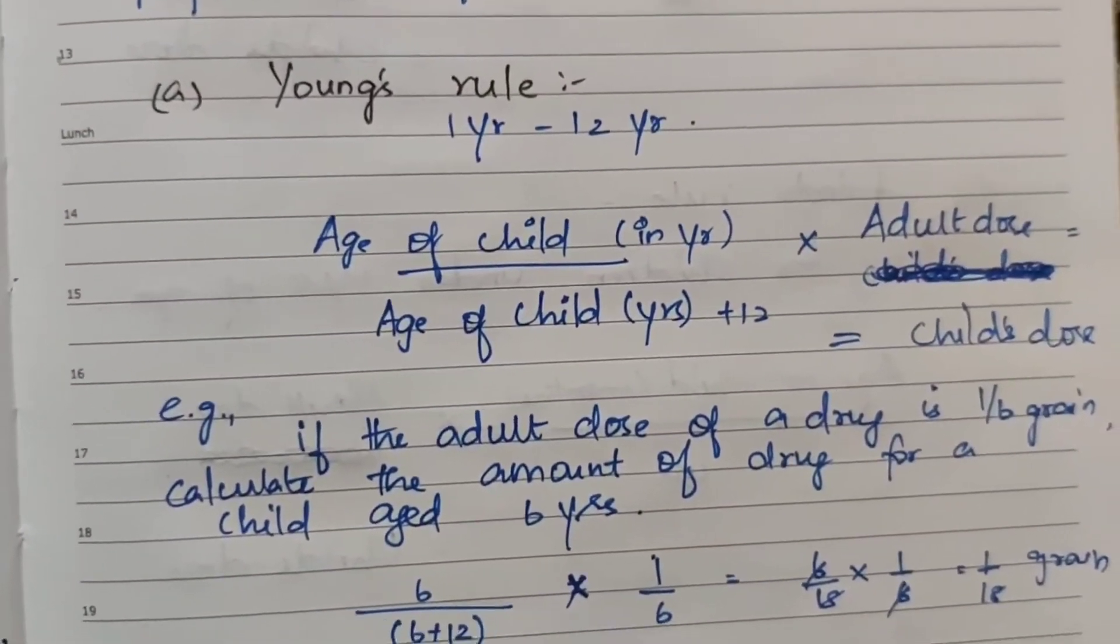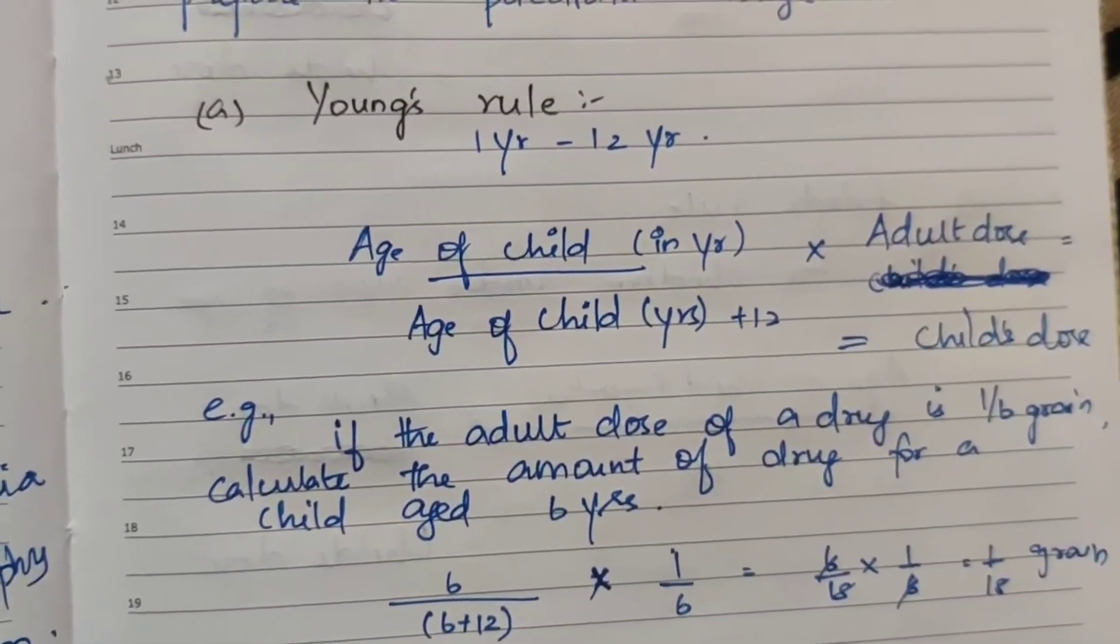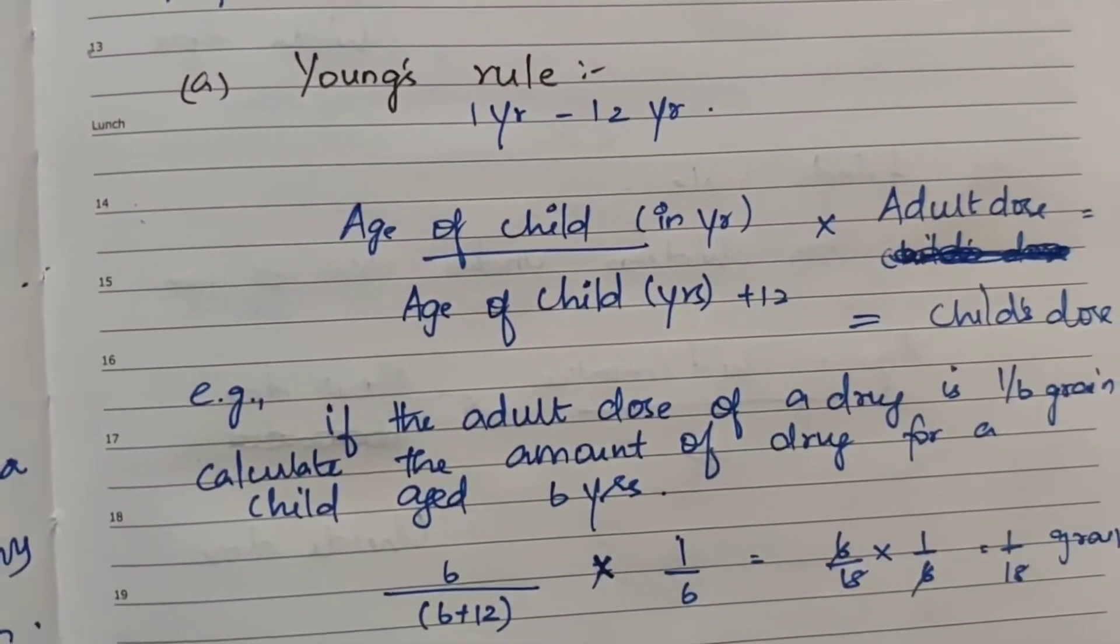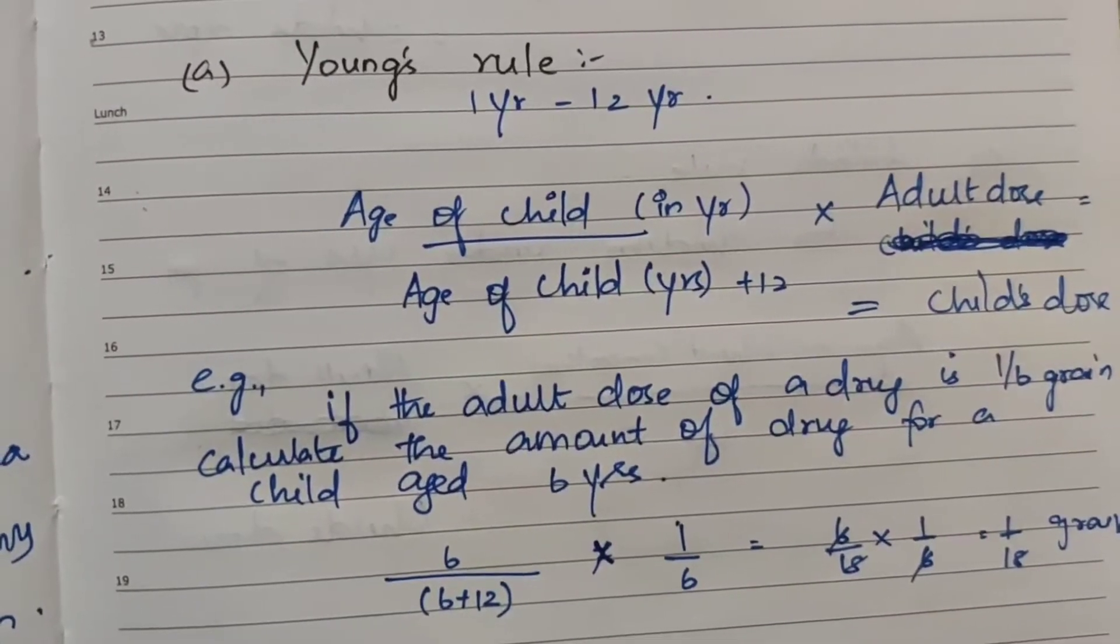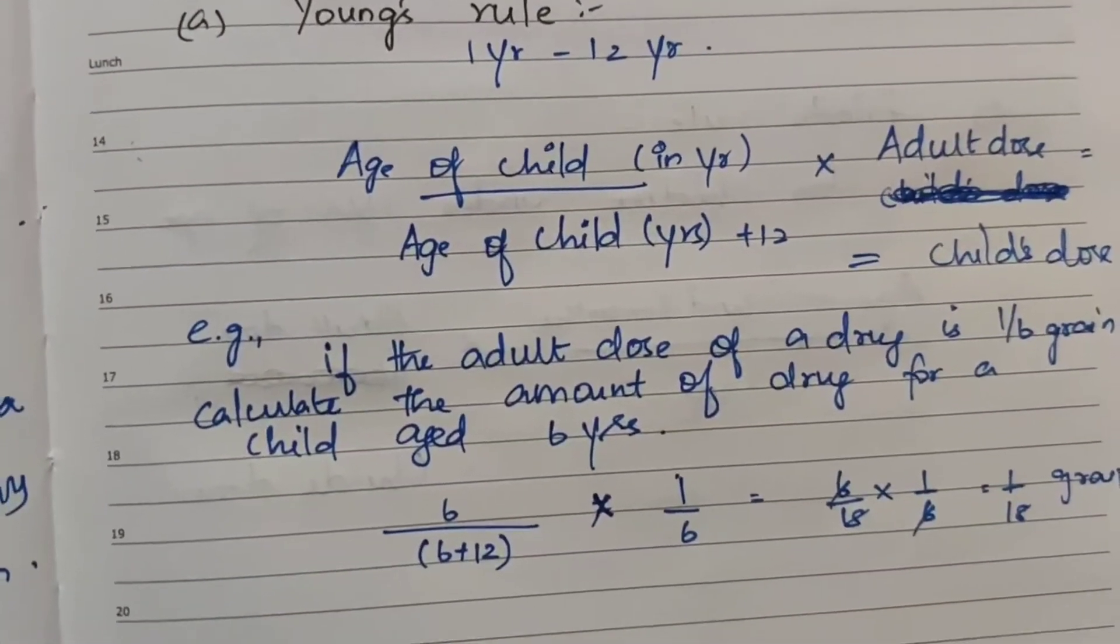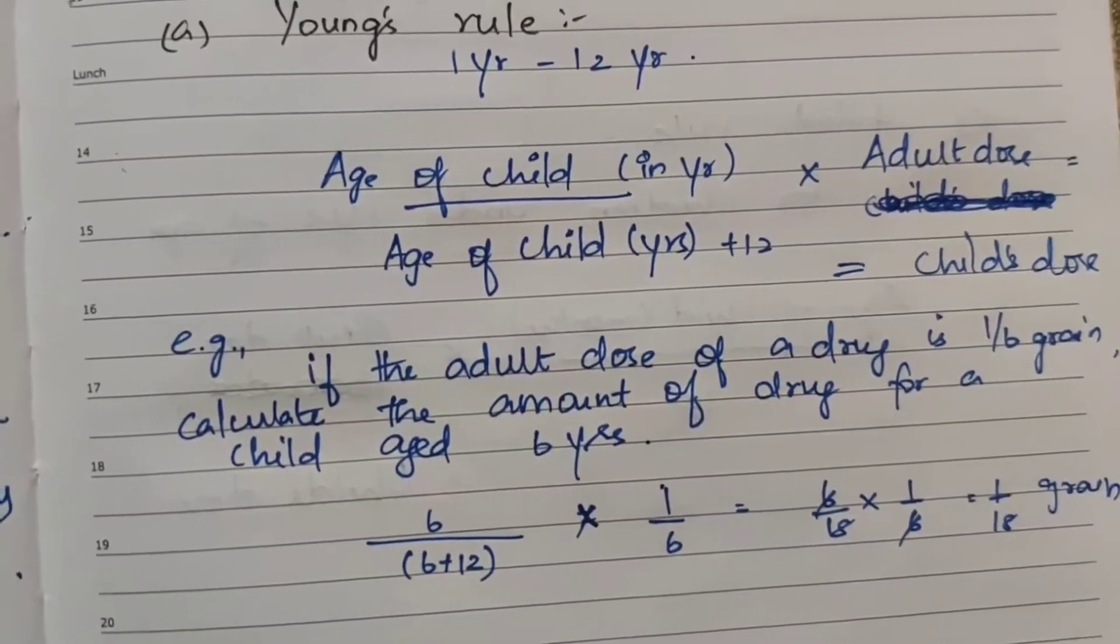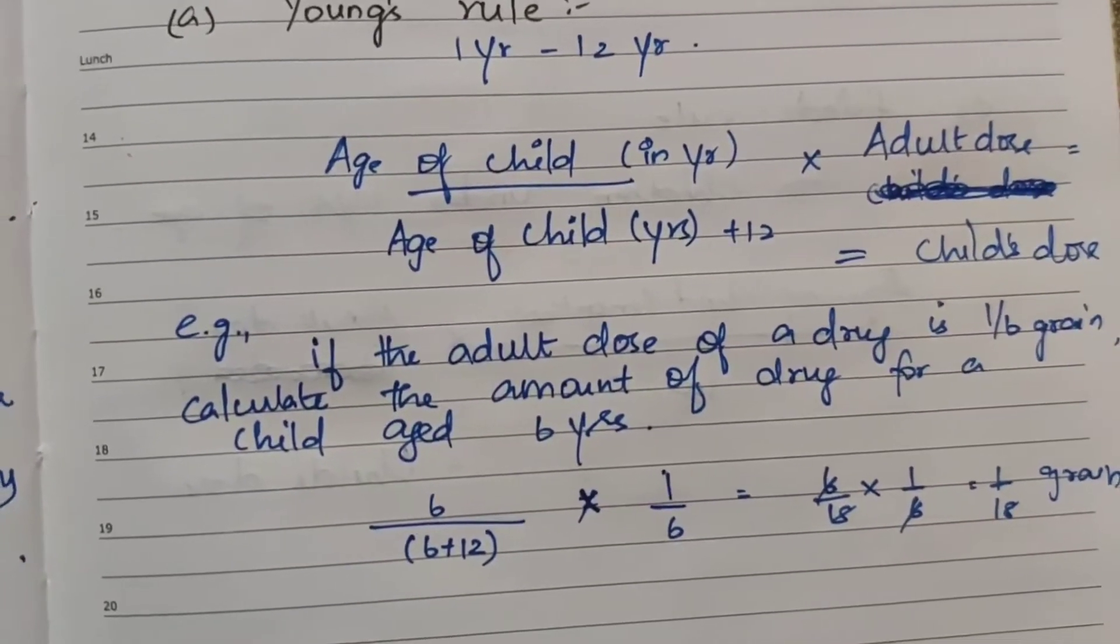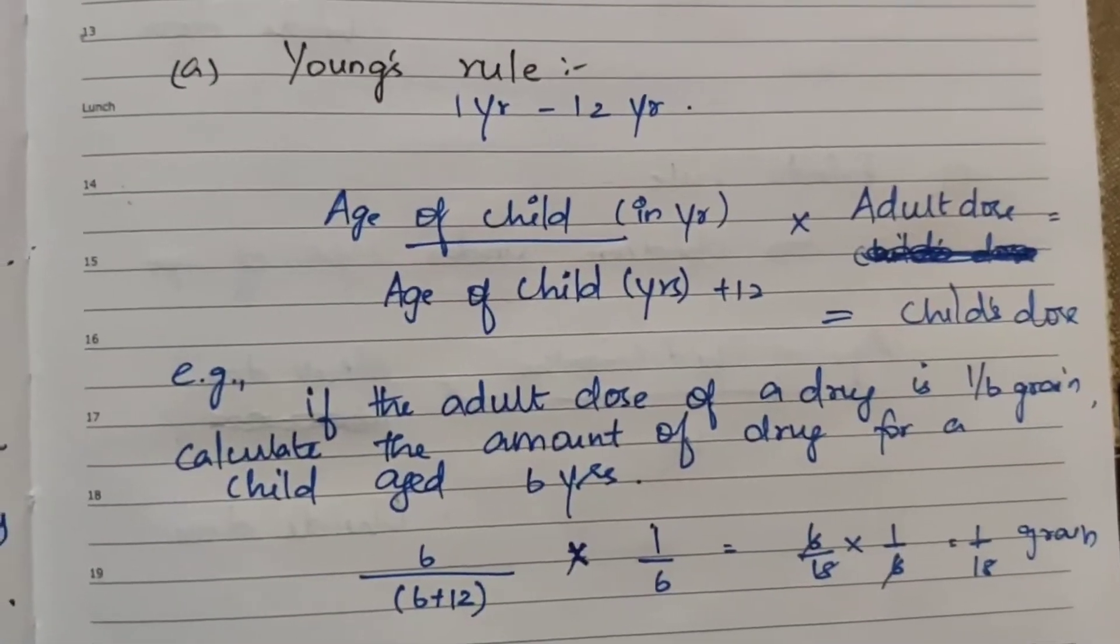First one, Young's Rule. This is the formula for the children's age group, about 1 year to 12 years. The formula is: age of child in years divided by age of child in years plus 12, multiplied by adult dose, equals child dose.